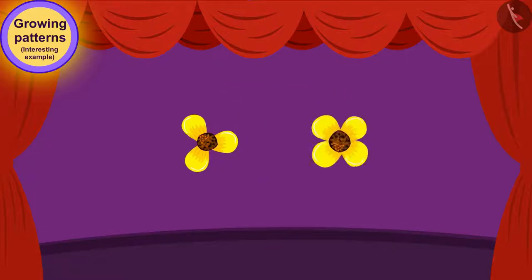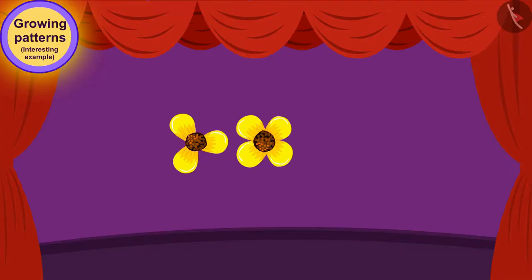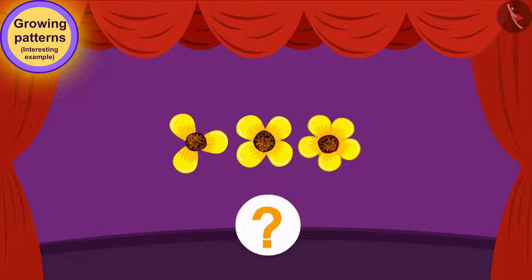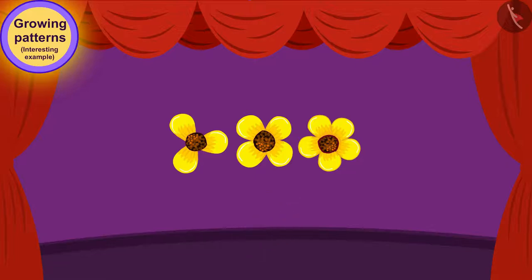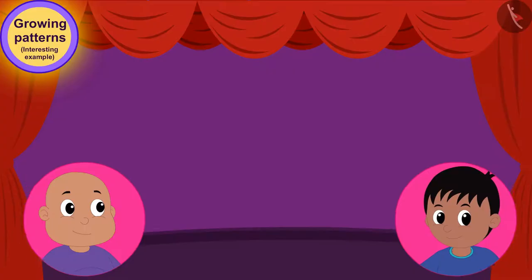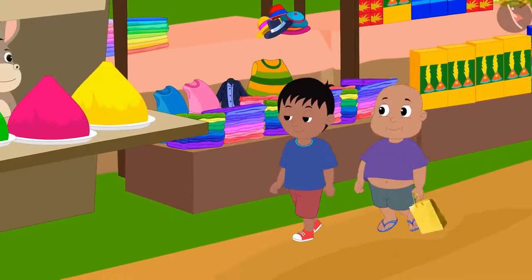The pattern began with a three-petal flower, then a four-petal flower was added to it. In this way, every time a flower with one more petal is being added. Now how many petal flowers do we have to add to carry this pattern forward? Exactly — we have to add a flower with six petals! Bablu bought the dress and they went to the next shop.